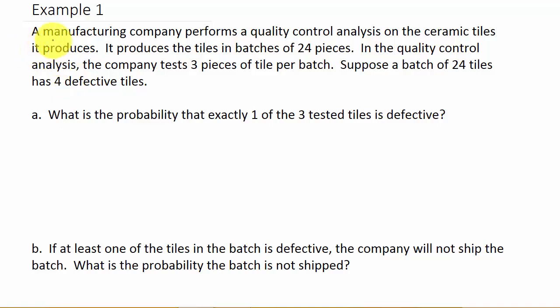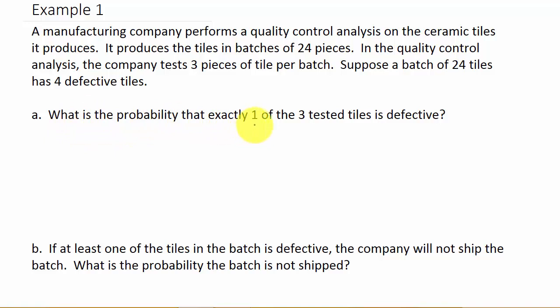The problem here says a manufacturing company performs a quality control analysis on ceramic tiles it produces. It produces tiles in batches of 24 pieces, and the company tests three pieces per batch. Suppose a batch of 24 tiles has four defective tiles in it — so 20 are good — and we randomly choose three to test. We want to know: what is the probability that exactly one of the three tested tiles is defective?